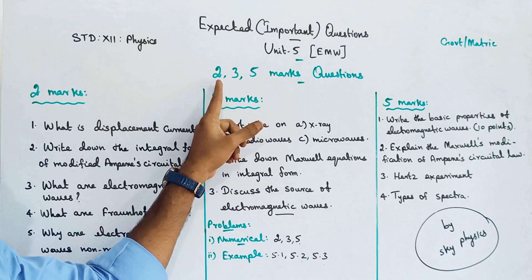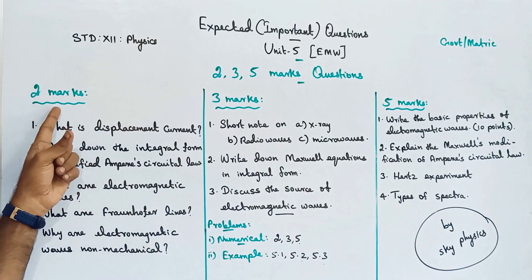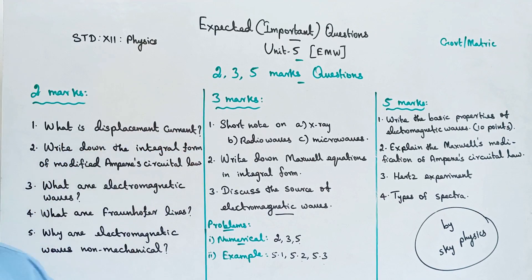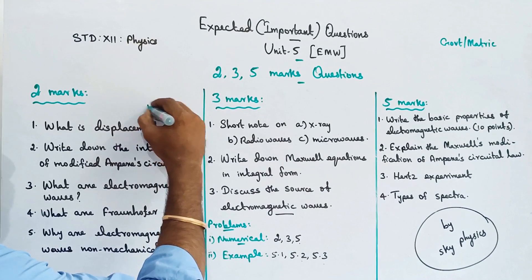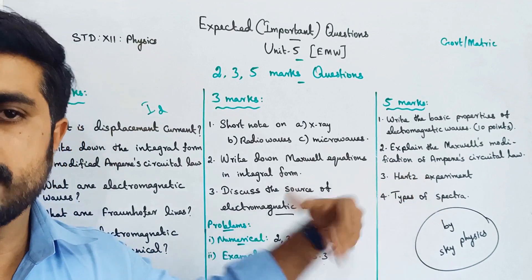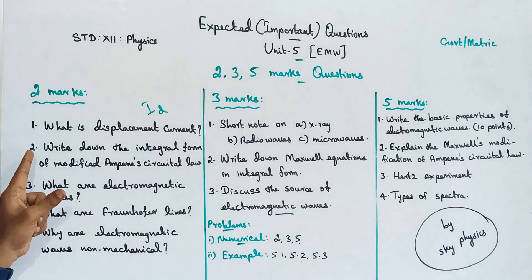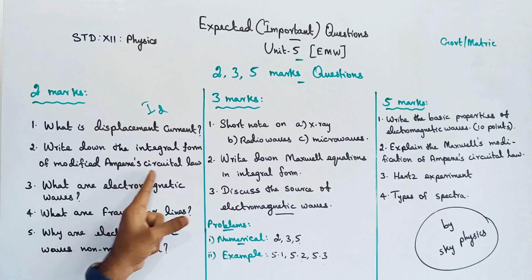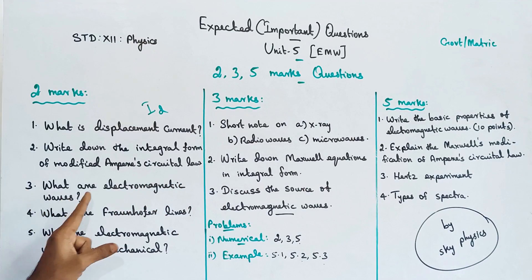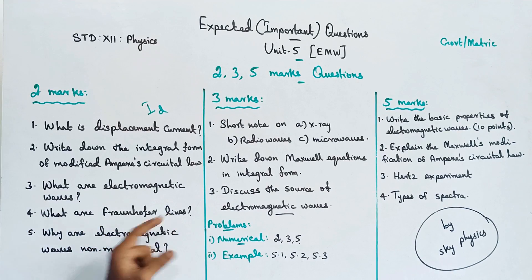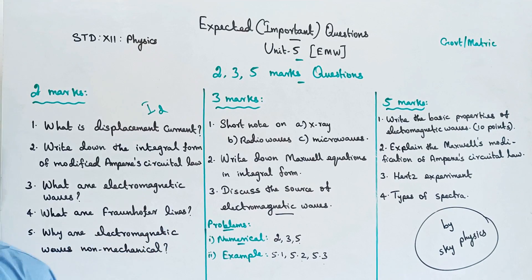So the questions are 2 mark, 3 mark, and 5 mark. For 2 marks: first, what is displacement current (ID)? Second, write down the integral form of Modified Ampere's Circuit. Third, what are electromagnetic waves? Fourth, what are Fraunhofer lines? Fifth, why are electromagnetic waves non-mechanical?